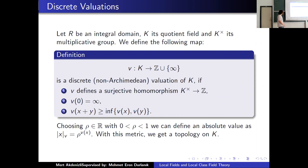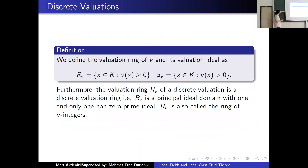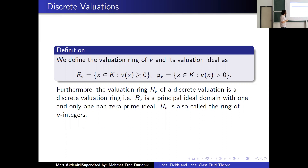It's infinity at zero, and it satisfies the ultrametric inequality. Choosing rho between zero and one, we can also define an absolute value. With this absolute value, we get a metric and a topology on K. We define the valuation ring and the valuation ideal as follows. Furthermore, the valuation ring R_V corresponding to these discrete valuations is a discrete valuation ring, meaning it is a principal ideal domain with one and only one non-zero prime ideal. R_V is also called the ring of V-integers.